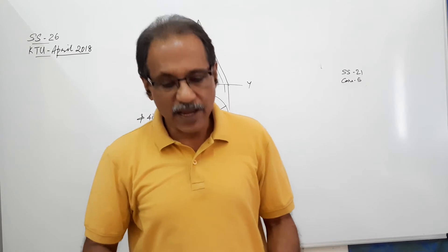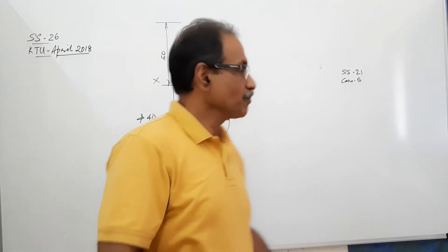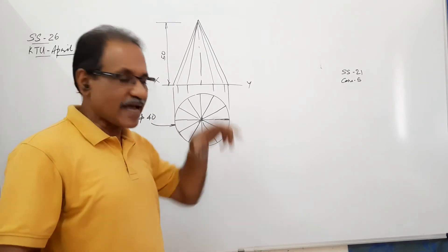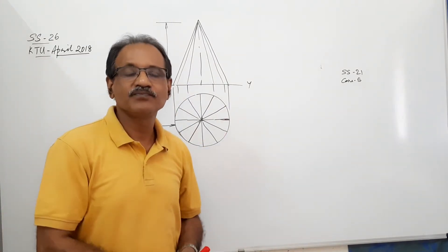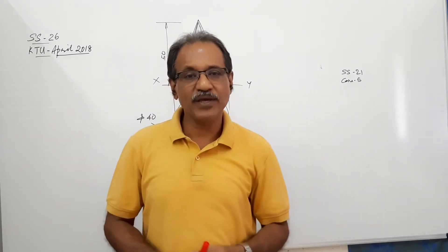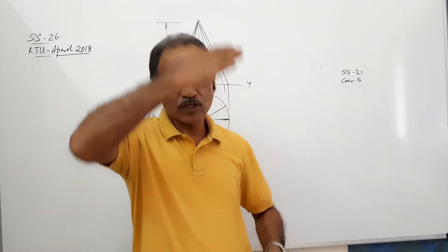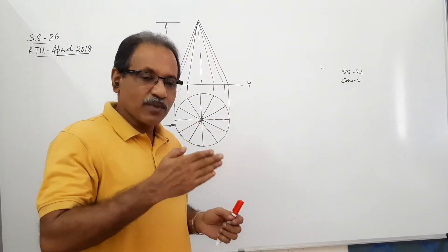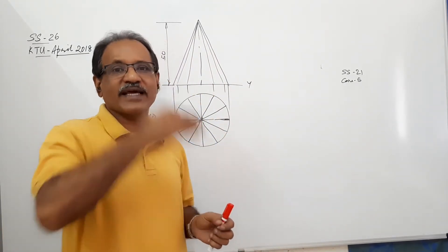The question says about a cone, 40mm diameter, 50mm axis, standing on its base on the ground, cut by a cutting plane perpendicular to HP and parallel to VP, passing through 10mm in front of the vertical axis.